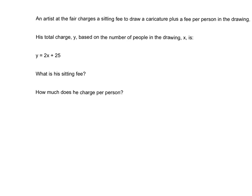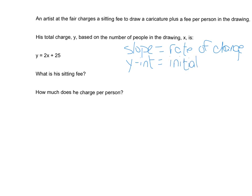With an equation, notice there are only two numbers, so there's not a lot of ways to mess up. This is slope-intercept form — y = mx + b. The slope is the rate of change, and the y-intercept is your initial value. So the slope is m and the y-intercept is b. In y = 2x + 25, m is 2 and b is 25.